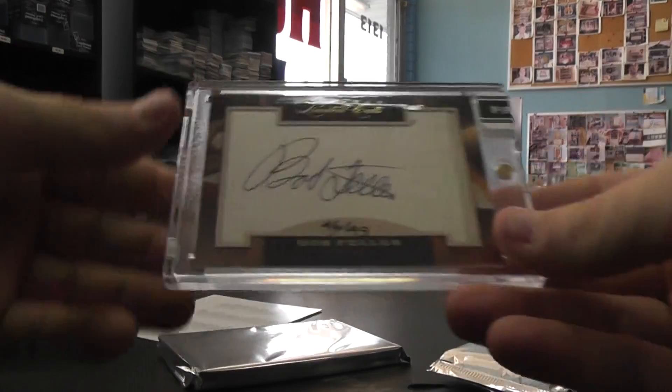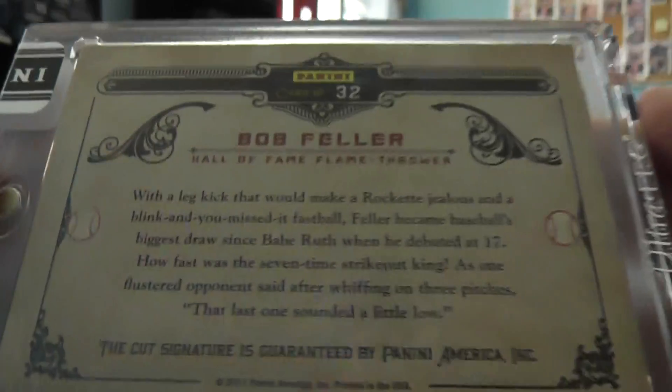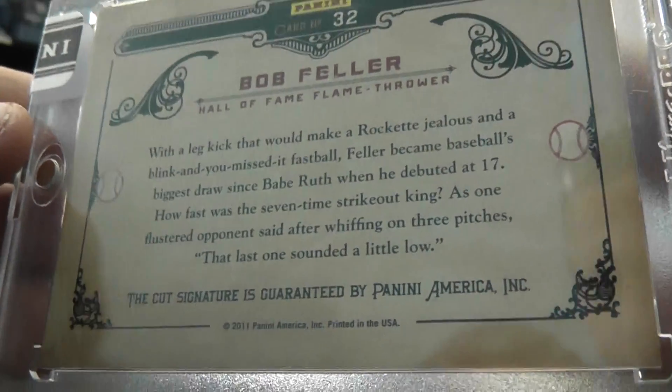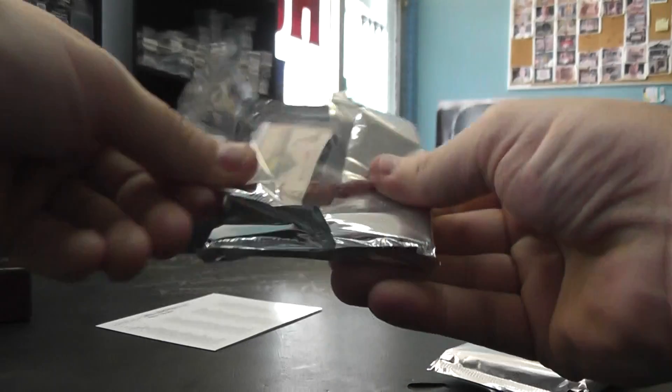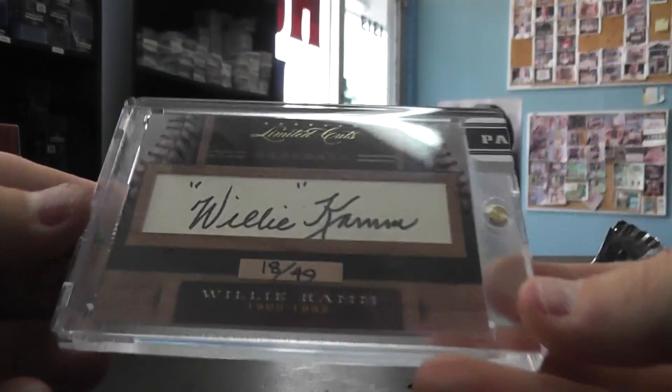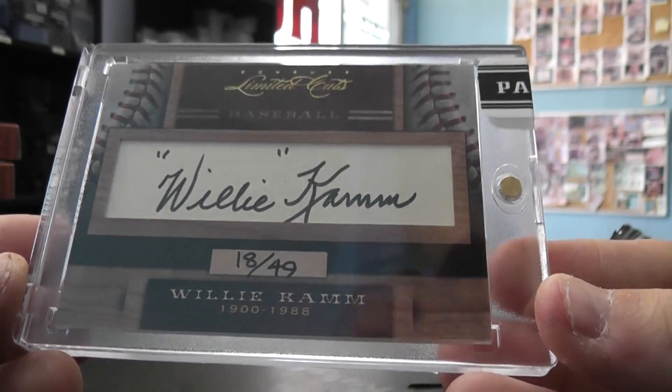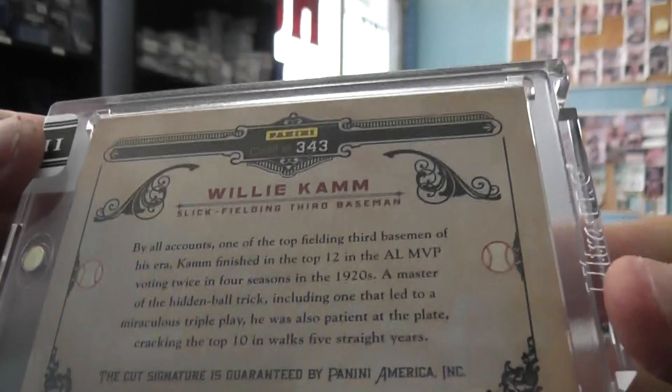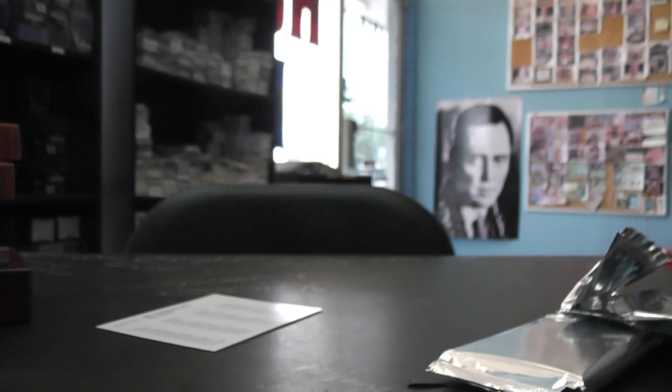Here we go, 2011 Cuts number 249, Bob Feller, 46 of 49, and there's all of his good stuff. Okay, and the last one from this case will be number 249, Willie Mays, 18 of 49, and there's Willie's autograph. Alright, so there you have it. I appreciate it Mike, as always. I'll get these packaged and on the way man, see ya.